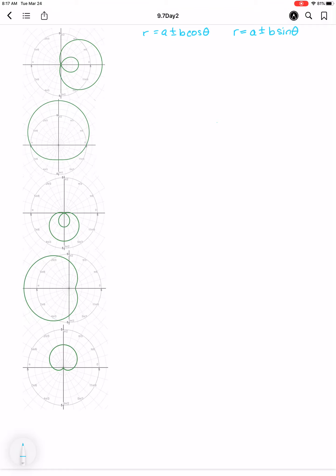When we're looking at it, we will identify that it's a limaçon. Now all of these are limaçons, the first being an inner loop, convex inner loop, we have a dimpled one, and then a cardioid at the bottom. First, we need to identify the symmetry. So this first one is symmetric about the polar axis. So I know it's going to have the cosine of theta because of that.